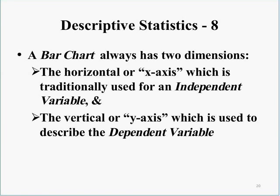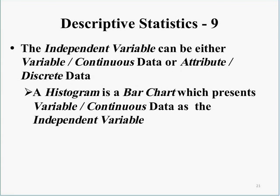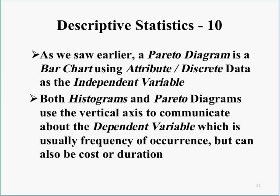We continue this convention because it is tradition and reversing it would complicate understanding — the last thing we want in a courtroom presentation. The independent variable can be either variable or continuous data, or attribute or discrete data. A histogram is a bar chart which presents variable or continuous data as the independent variable. A Pareto diagram is a bar chart using attribute or discrete data as the independent variable. Both use the vertical axis for the dependent variable, usually frequency of occurrence, but also cost or duration.